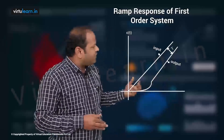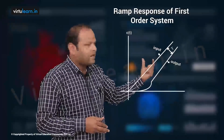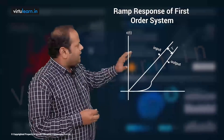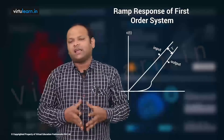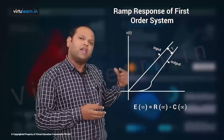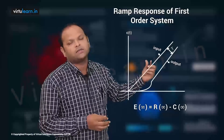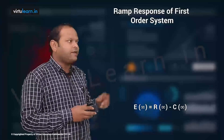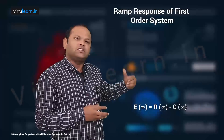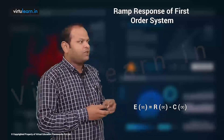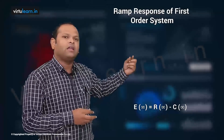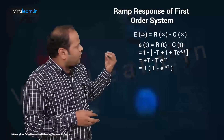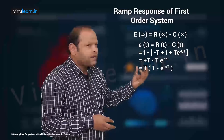From this it is very clear: we have a very small amount of transient response and a large steady state response. Now if you take the steady state error, e(∞) = r(∞) − c(∞). We know r(t) = t for unit ramp. Since r(∞) goes to infinity, we instead take e(t) = r(t) − c(t).